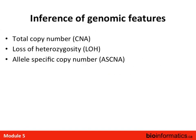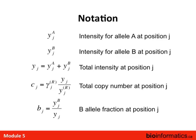Once pre-processed, we can go on to inference of genomic features: total copy number for CNAs, loss of heterozygosity, and allele-specific copy number changes. In notation: Y_j^A is the intensity for allele A at position j; Y_j^B for the other allele; the total intensity Y_j is the sum. The total copy number C_j is the total intensity compared to some reference — a matched normal, a pooled reference, or the average in a population — multiplied by a constant factor, usually two. The log ratio is often used so deletions are comparable to amplifications in terms of scale.